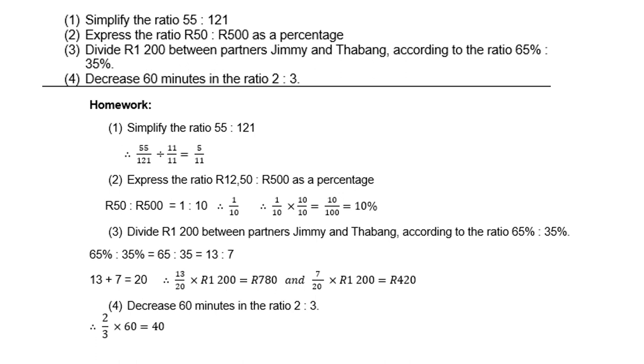Number 4: Decrease 60 minutes in the ratio 2 is to 3. If you want to decrease, remember, the smaller number on top, so it's 2 thirds times 60, therefore 40.